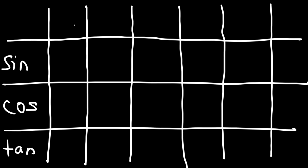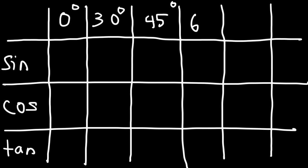Here will be the angles: 0 degrees, 30 which is pi over 6, 45 that's pi over 4, 60 is pi over 3, and 90 which is pi over 2.